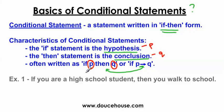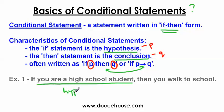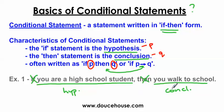Let's look at the first example. It says: if you are a high school student, then you walk to school. Is this a conditional statement? Does it have the words 'if' and 'then' with statements after each? Yes, it does — so this is a conditional statement. The first statement is the hypothesis, and the second statement after the word 'then' is the conclusion. Note: the hypothesis does not include the word 'if,' and the conclusion does not include the word 'then.' The hypothesis runs from after 'if' up to the comma; the conclusion runs from after 'then' to the end of the sentence.